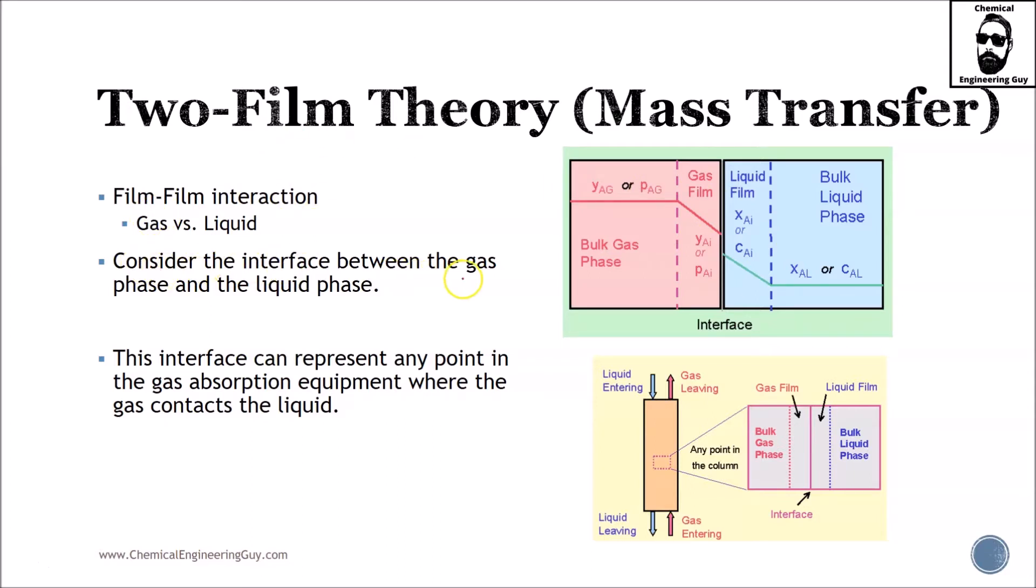Consider the interface between the gas phase and the liquid phase. The red one is the gas phase, the blue one is the liquid phase, and you have a point where both interact—this is the interface. It can represent any point in the gas absorption equipment: top, bottom, walls, plates, wherever you have a point of interaction. The beauty of this theory is that you don't need to model individual equipment; you can assume this for the whole absorption unit.